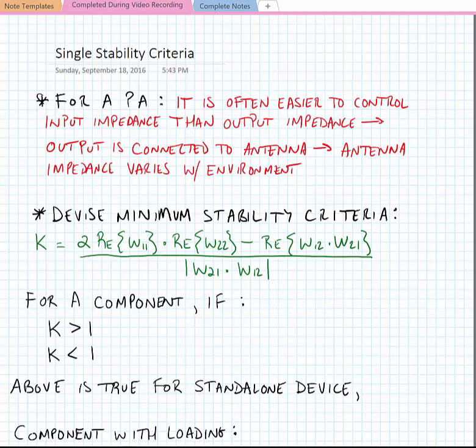For a component, if K is greater than one, the component is stable, and if it's less than one, it's potentially unstable. Now to be potentially unstable doesn't inherently mean that the device is unstable. This means that there might be some impedance that we could present to either the input or the output that could cause the device to lose stability. The above is true for a standalone device, but we can also change this condition with loading.